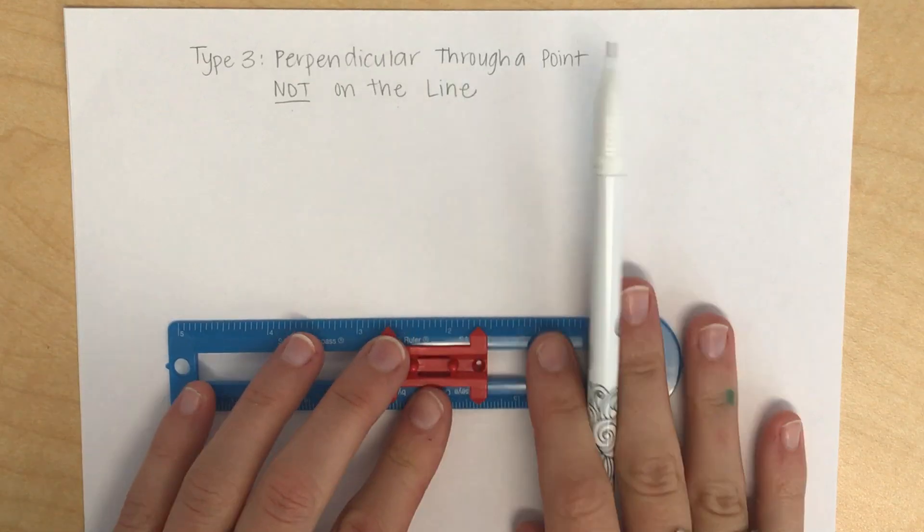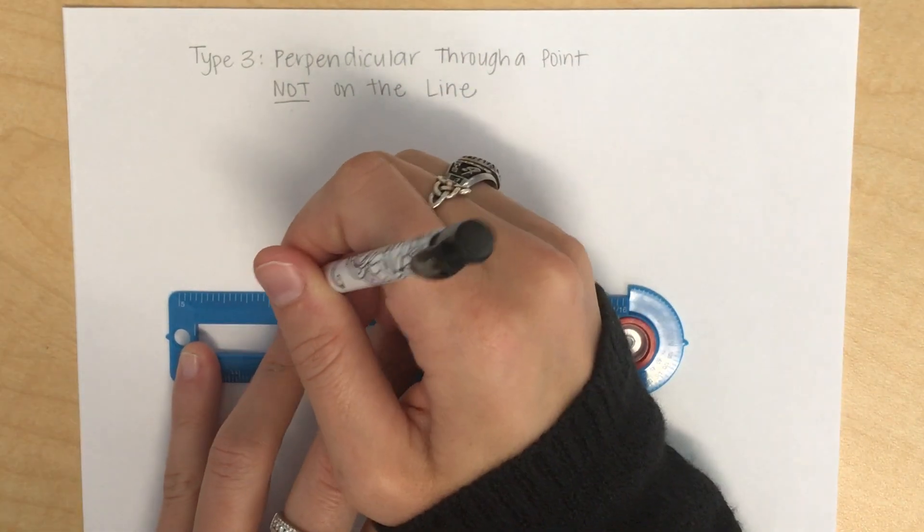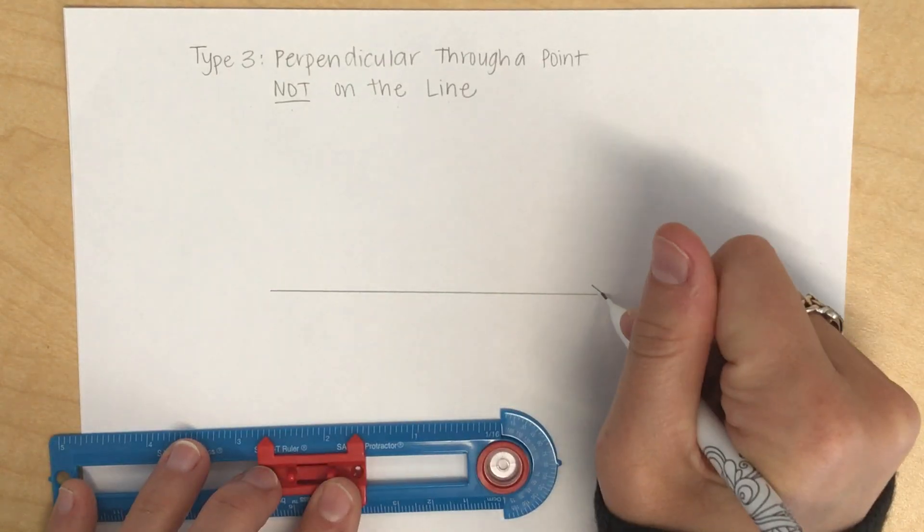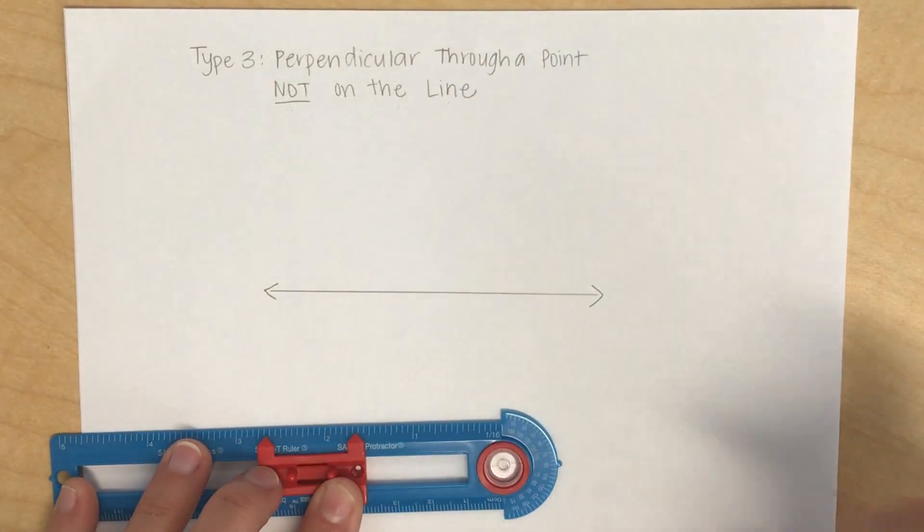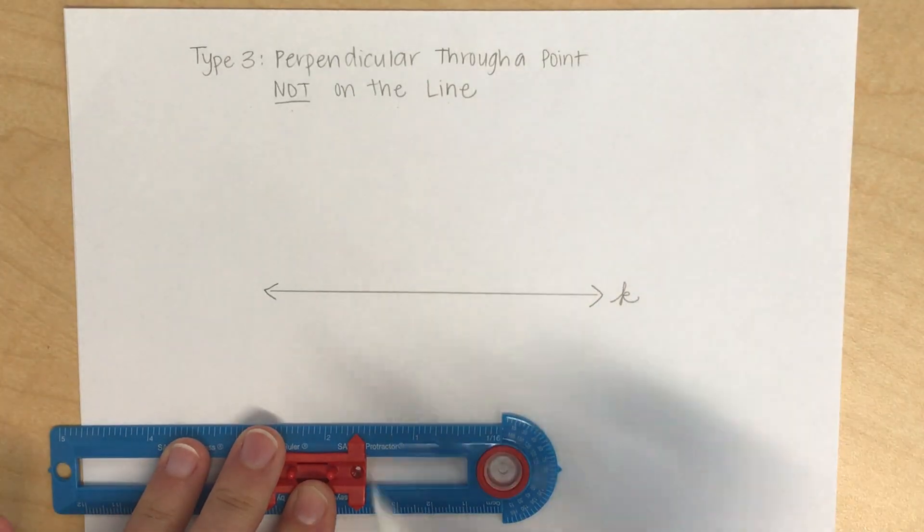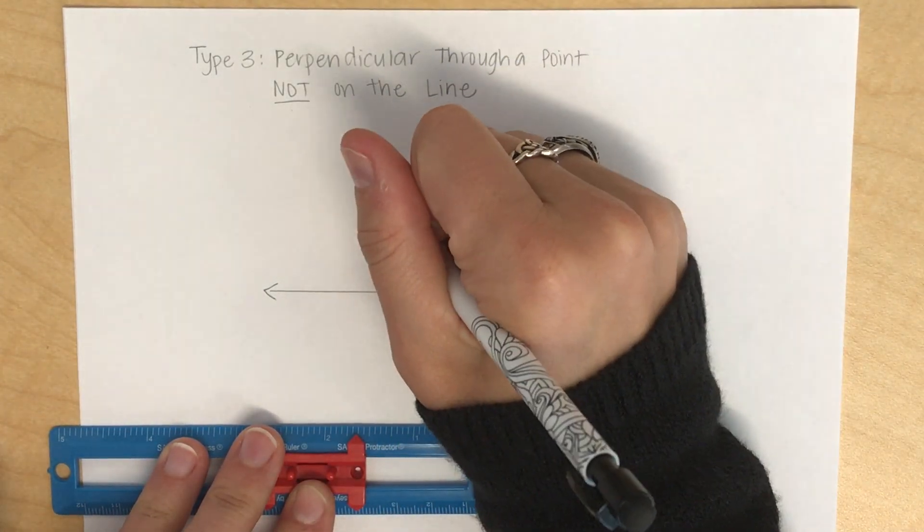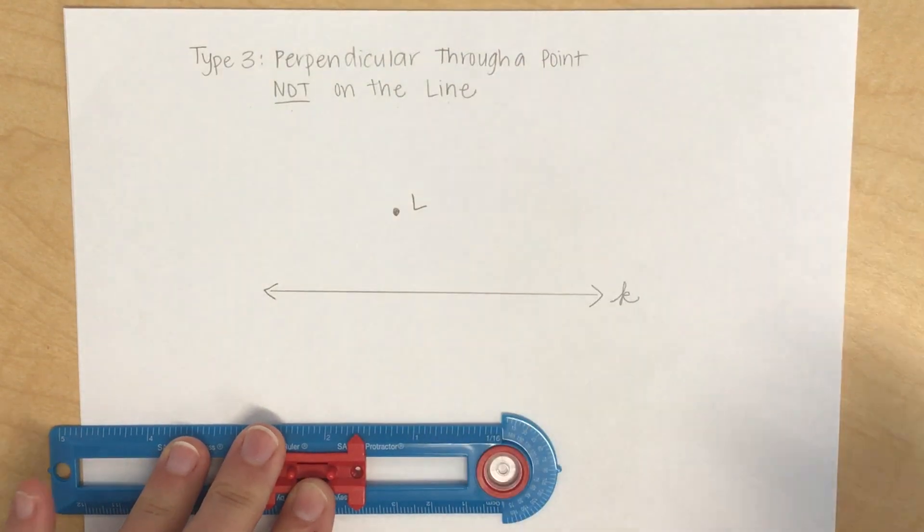So I'm going to start by drawing myself a nice straight line using my straight edge. I'm going to call this line K and then I'm going to pick a point somewhere above it that's not on the line. So I'm just going to pick a point and I'm going to call this point L.